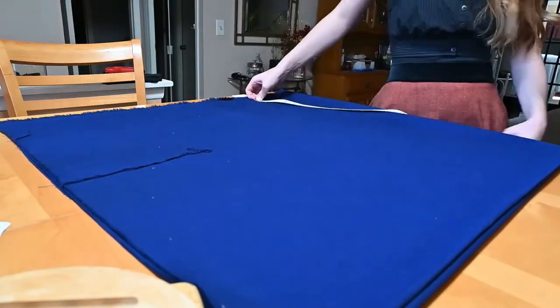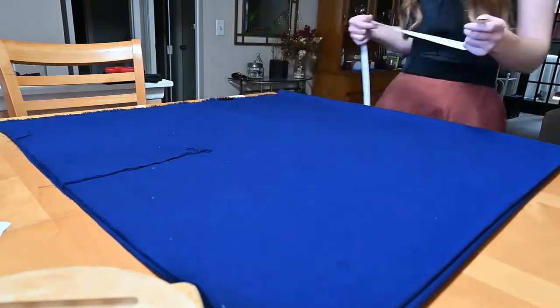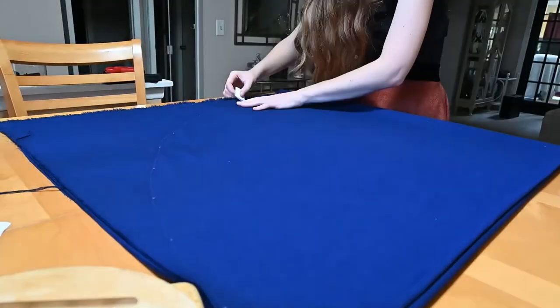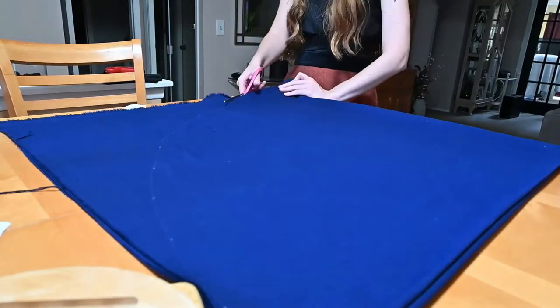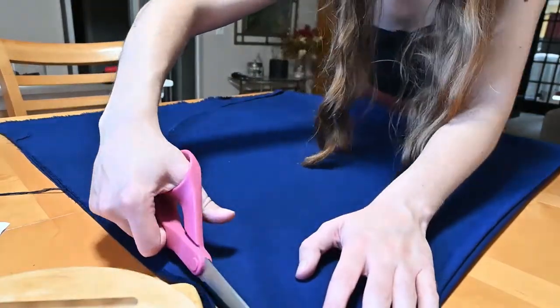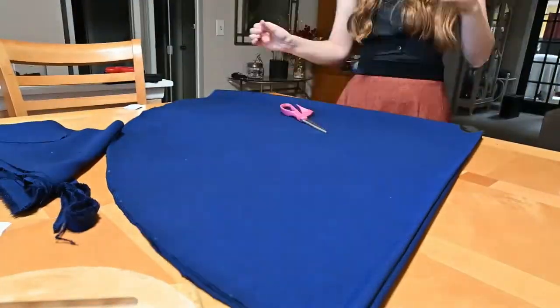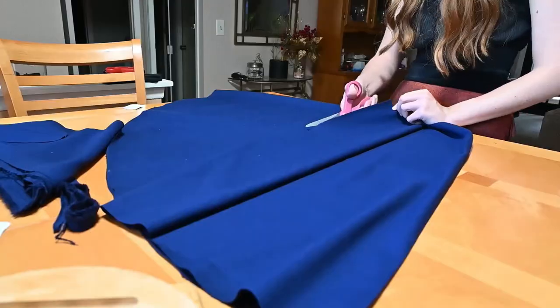And then after that, I did a real careful trace all around those dots, and then I cut it out. I used the same technique to cut out the neck hole with the measurements I just acquired. And now, since I have a big blue circle, I cut a slit down the middle to indicate where the cape would open up.